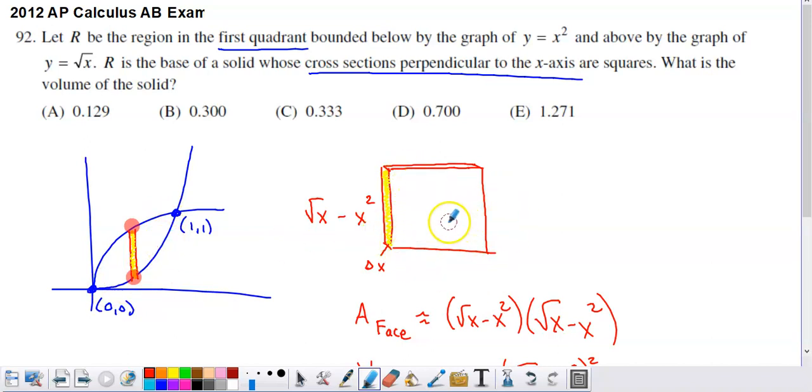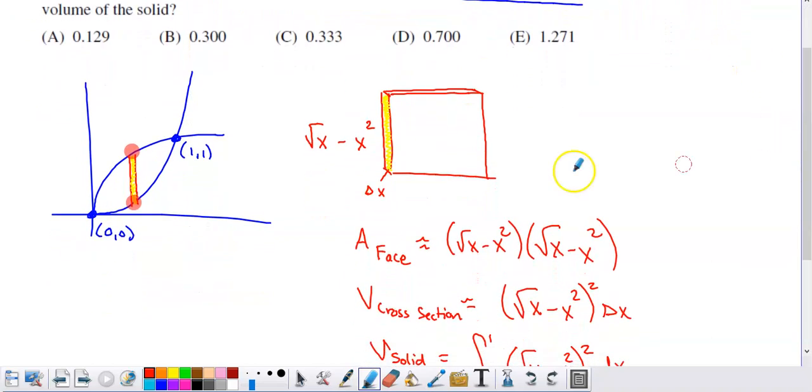What's the area of the face of this cross-section? It's just going to be the height that we just labeled times itself or the height squared. If I want the approximate volume of this one cross-section that we've drawn, I just have to take the area of the face, the height squared times the thickness, which is delta x.